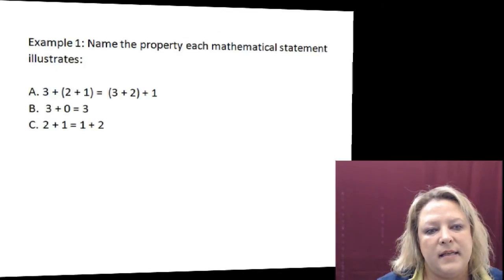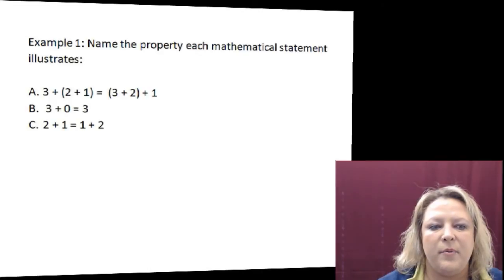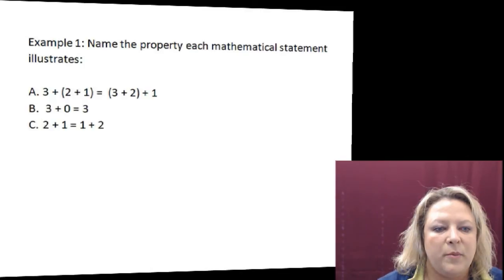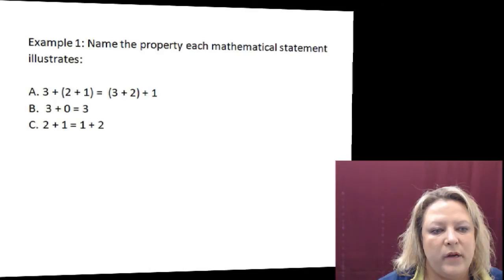So this last example says to name the different properties that we're talking about. In example A, you have the parentheses. The order of the numbers did not change, but the parentheses changed. First, the 2 and the 1 are grouped together. And then in the second side, the 3 and the 2 are grouped together. But if you notice, when you use parentheses, it doesn't matter. You still get the same value. But in parentheses, we are using the associative property of addition.